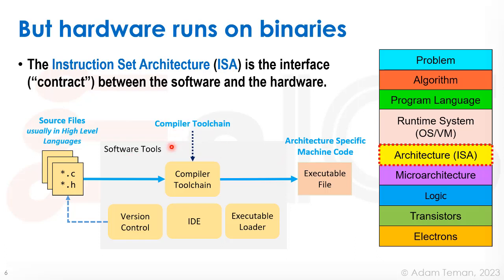For that, we have a tool chain, which goes from source files — usually in high-level languages — and produces an executable file that's in architecture-specific machine code.